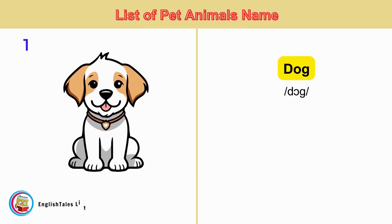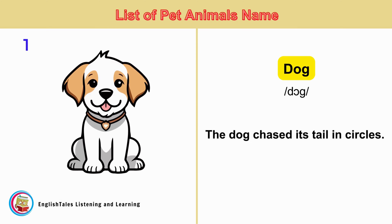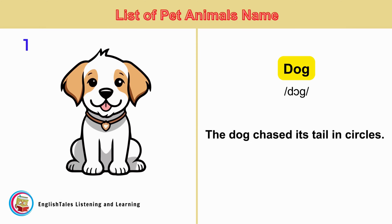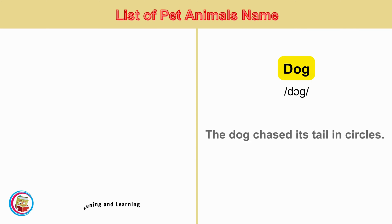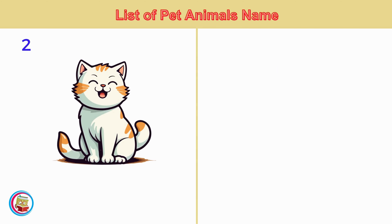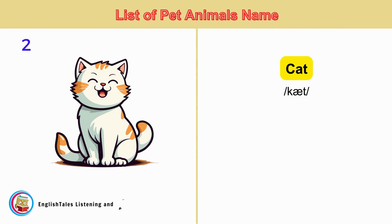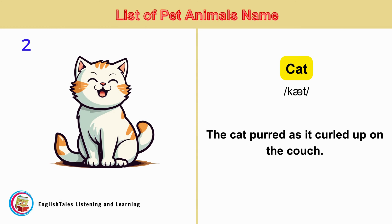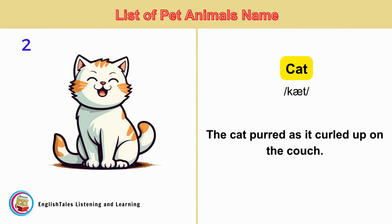Dog. The dog chased its tail in circles. Cat. The cat purred as it curled up on the couch.